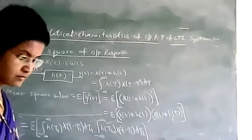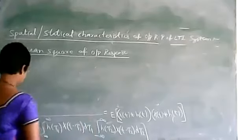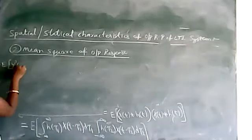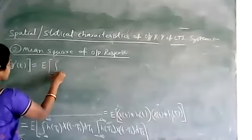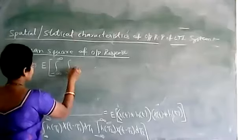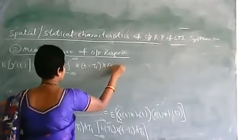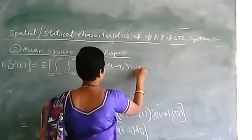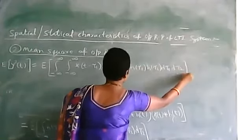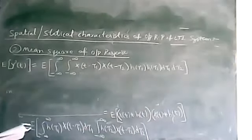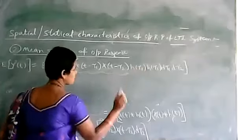We rearrange this expression. So the expected value of y²(t) can be written as the expected value of the double integral — integral from minus infinity to plus infinity, integral from minus infinity to plus infinity — of x(t − τ₁) · x(t − τ₂) · h(τ₁) · h(τ₂) dτ₁ dτ₂.